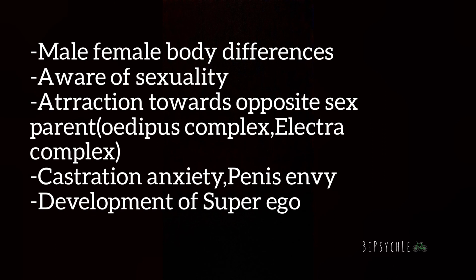The attraction of a girl toward her father is called the Electra complex. The phallic stage involves conflicts related to attraction toward the opposite-sex parent. For males, this produces castration anxiety. This stage also involves male-female biological difference, genital organ comparison, and the development of penis envy.